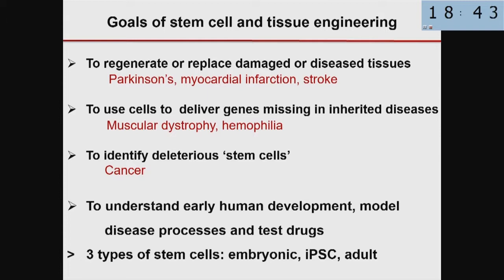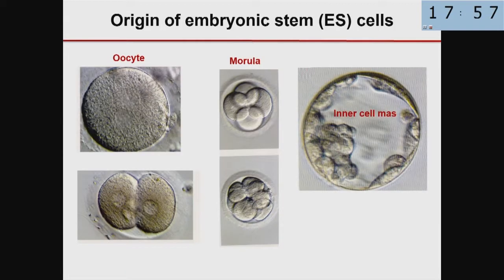For instance, for the treatment of Parkinson's, myocardial infarction, heart attack, and stroke; to use cells to deliver genes that are missing in inherited diseases like muscular dystrophy or hemophilia; and to identify deleterious cancer stem cells that lead to malignancy; and finally to understand early human development, model disease processes, and test for drugs in culture. There are basically three types of stem cells: embryonic, induced pluripotent stem cells, and adult tissue-specific stem cells, each with its relative advantages and disadvantages.